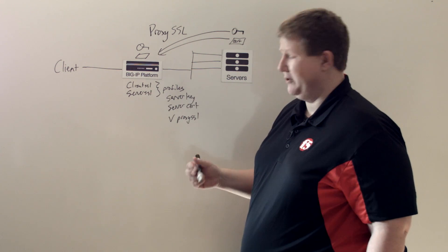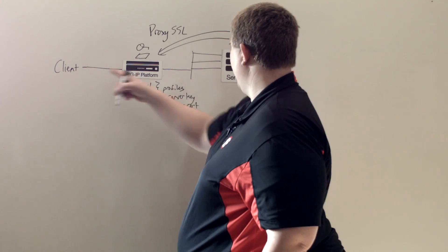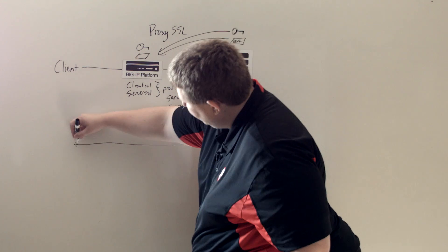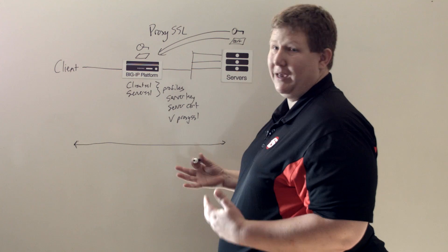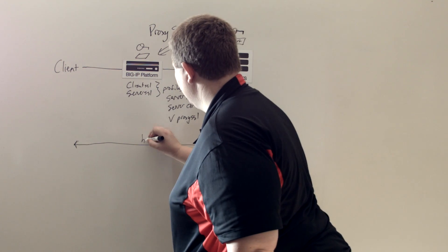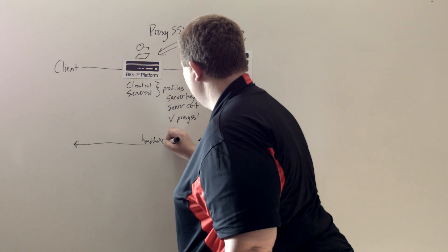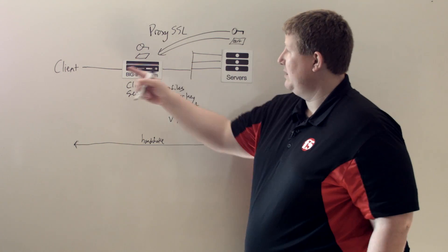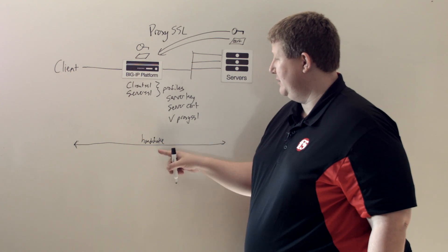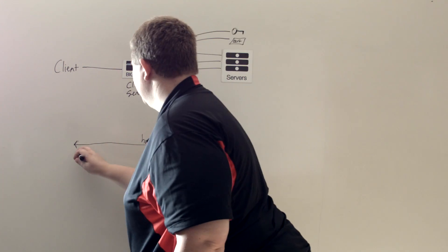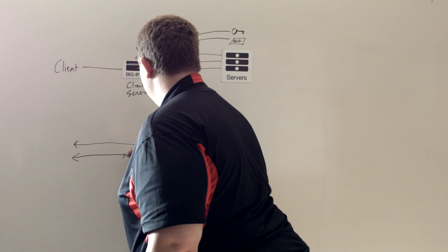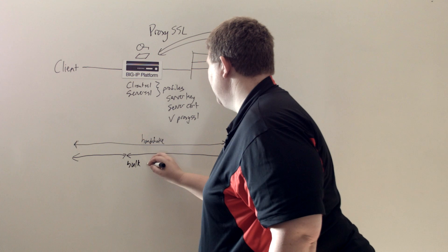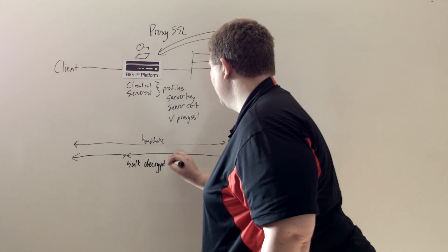Basically what that allows you to do is when the client connects to the server, the client will handshake directly with the server and the BIG-IP will not get in the way of that communication. And so this is the handshake. Then because the BIG-IP has the server key, it can derive the keys for client and server to do the decryption and then the re-encryption — this relationship of bulk decrypt and re-encrypt.